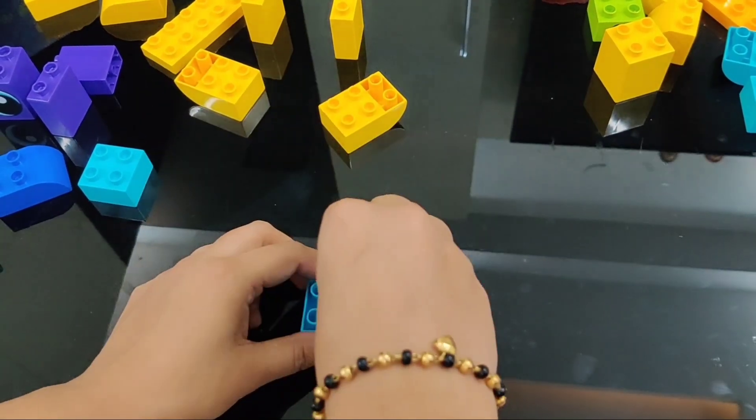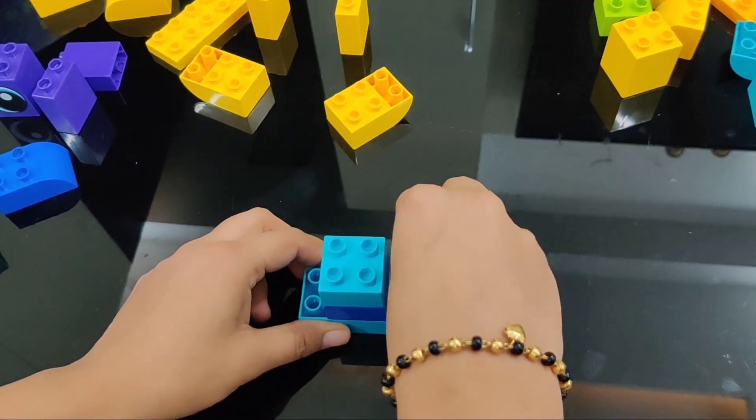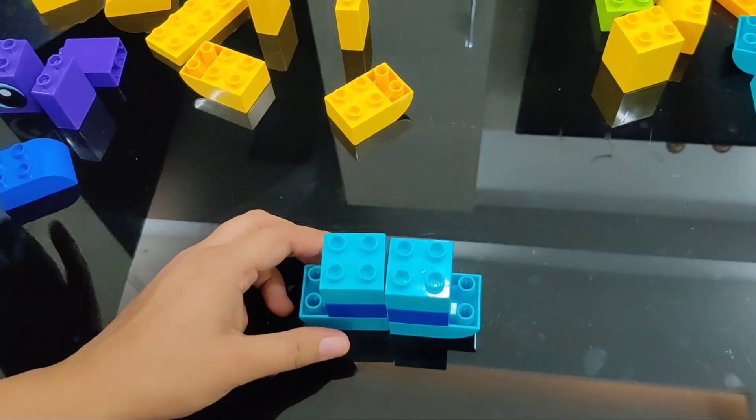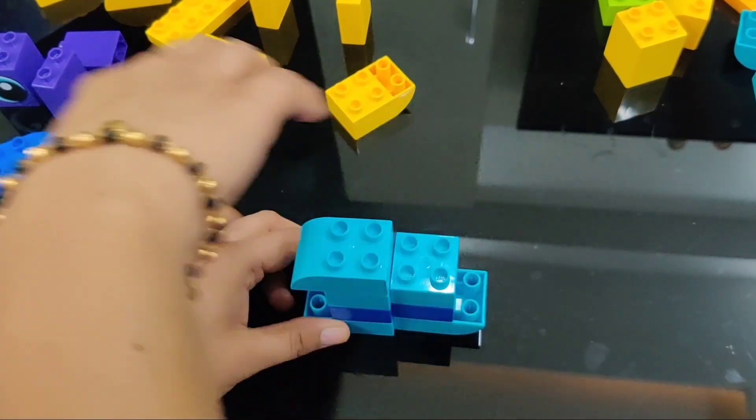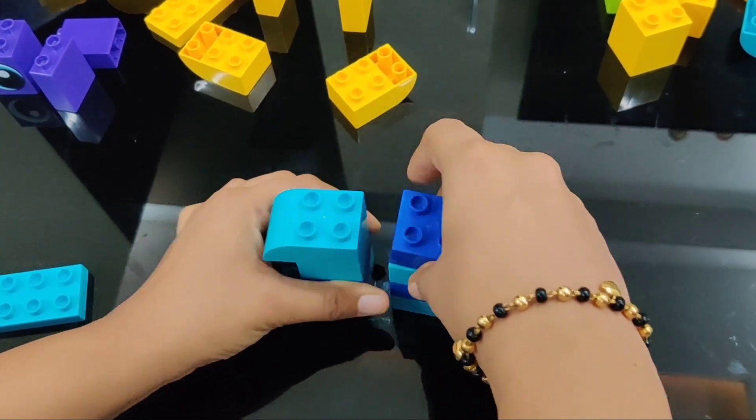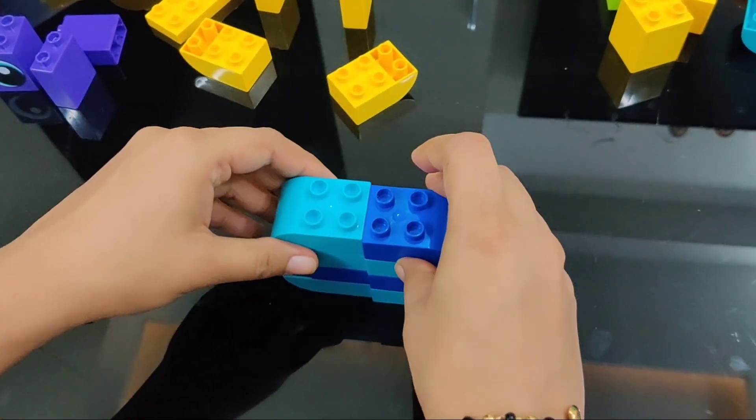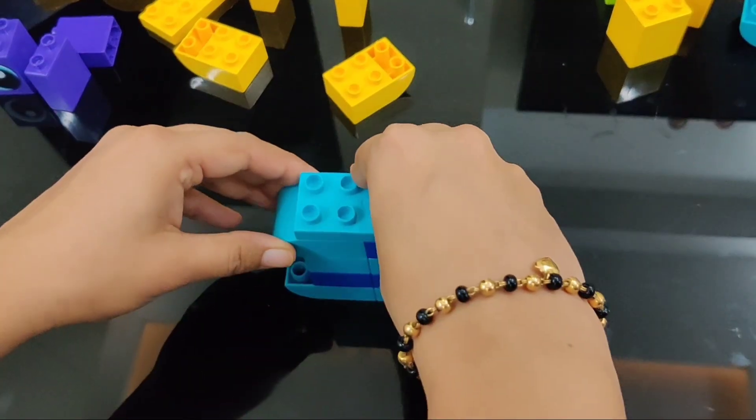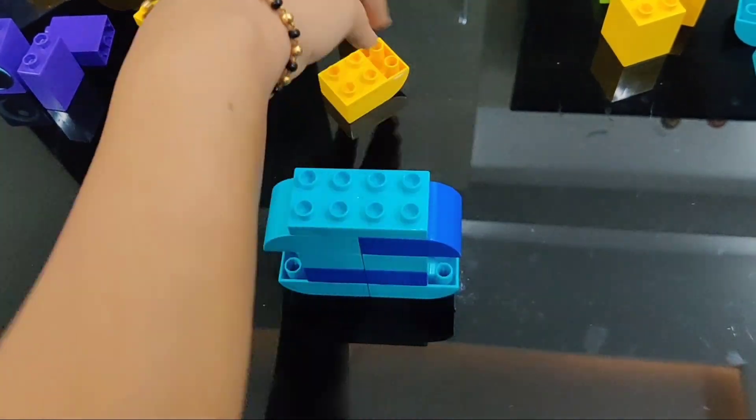Now I am attaching the blocks to make a monster. These blocks are very durable and so bright in color. Relating these LEGO DUPLO blocks to the LEGO bricks, they are extremely big which is surprising to see, but it is good for young children as they can manage and attach it easily. Now I am done with the legs and making the big mouth of the monster.